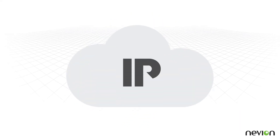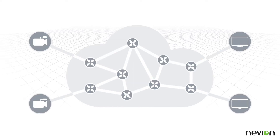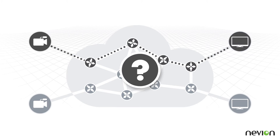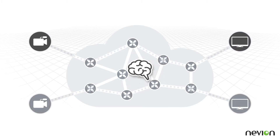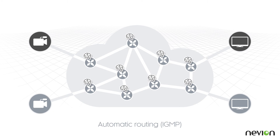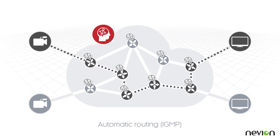Are you planning an IP media network? Consider carefully how to control the routing of signals on it. Automatic routing lets the smart switches in the network decide how to route signals from source to destination. This can work well once properly set up by network experts.